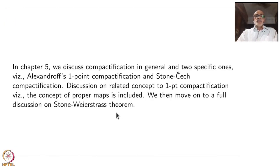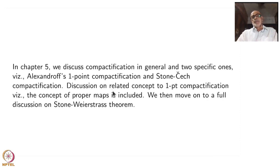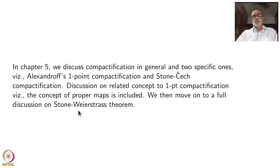In Chapter 5, we discuss compactification in general and then two specific ones: Alexander's One-Point Compactification and the Stone-Čech Compactification. Discussion on related concepts of proper maps is included. We then move on to the full discussion of Stone-Weierstrass theorem — which, as you may know, is about approximating continuous functions by polynomials, a classical result widely generalized by Stone.